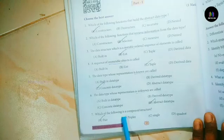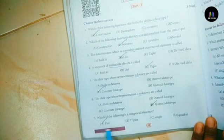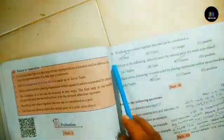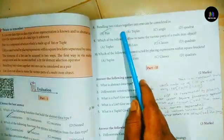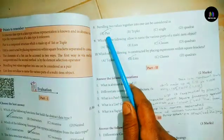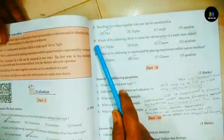Question number 7: Which of the following is a compound structure? Answer A: Pair. Question 8: Bundling two values together into one can be considered as? Answer, Option A: Pair.